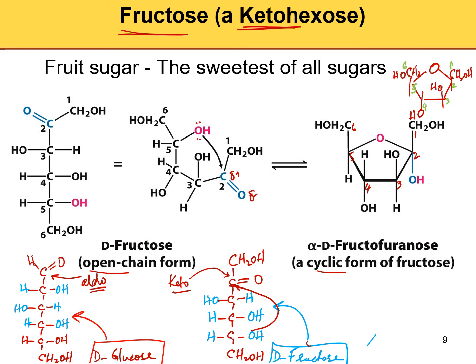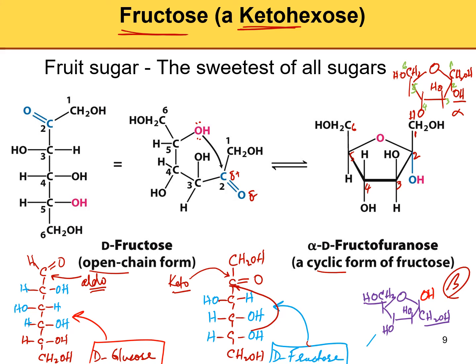At carbon number 2, you have to add an OH. If OH at C2 is down, this is alpha fructose. To draw beta fructose: draw a five-membered ring, place CH2OH on both ends, go up, then down, down, up, and put OH at C2 pointing up — that's beta. CH2OH must be on both ends. Please make sure you can draw fructose in open-chain form, alpha fructose, and beta fructose.